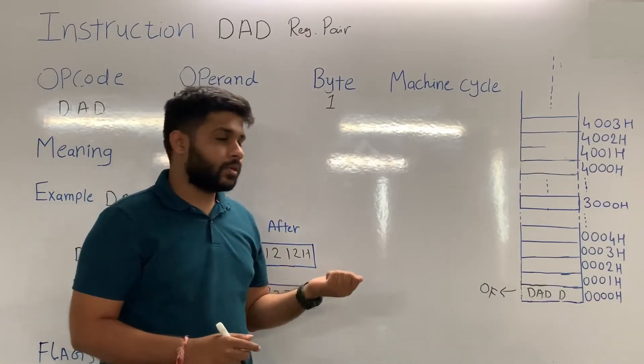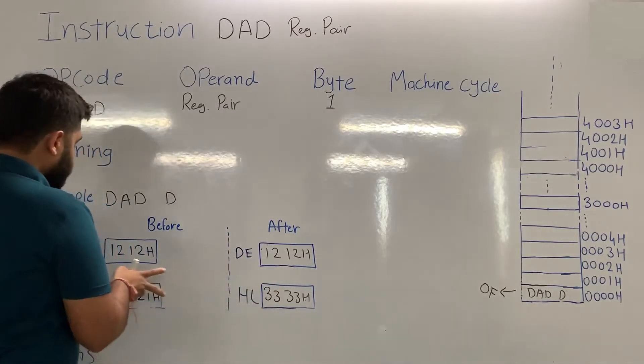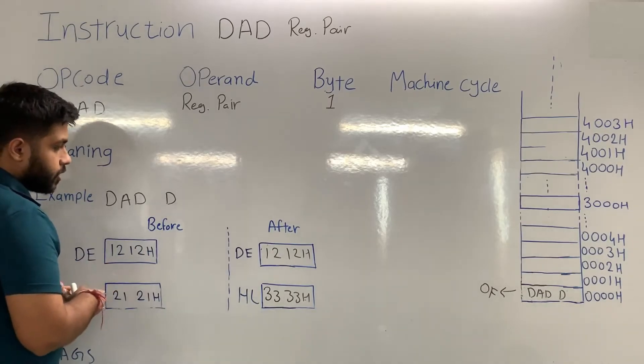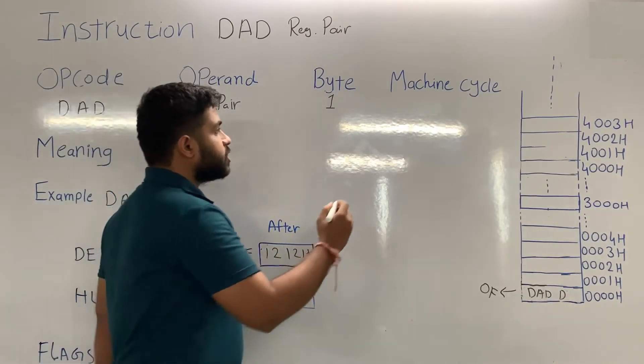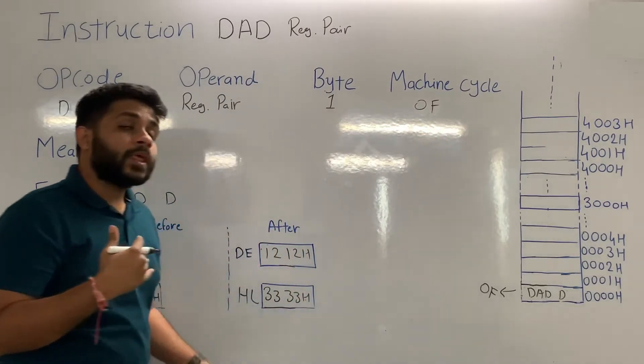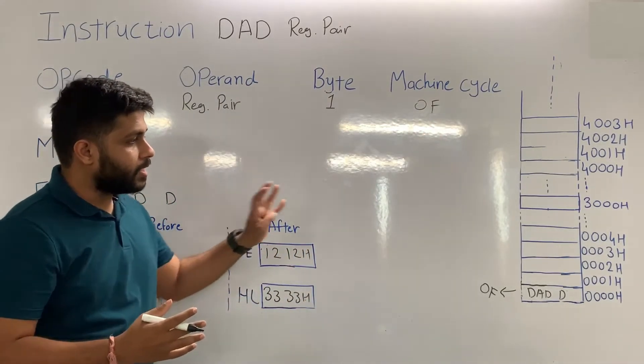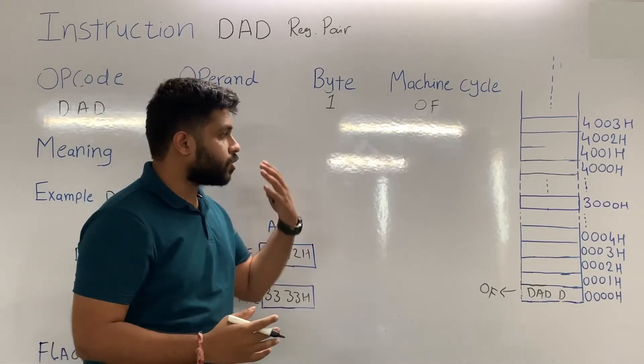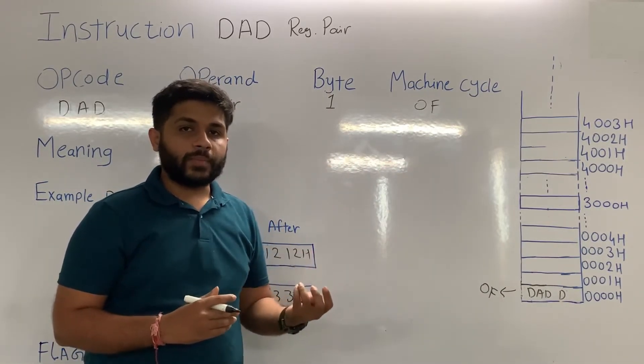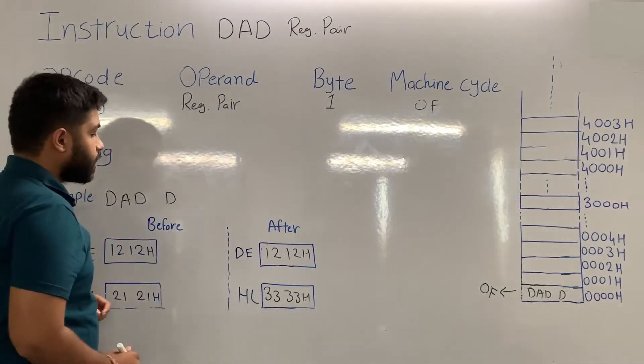During the execution, the processor is doing addition of these two 16-bit numbers and answer is stored in the internal registers. It means, only one machine cycle is required, i.e. opcode fetch. During the execution, processor is not interacting with memory, processor is not storing data to or reading any data from the memory. It means, only one machine cycle is required.